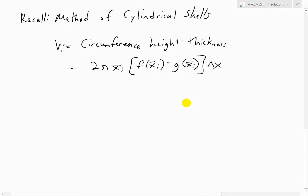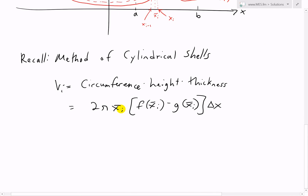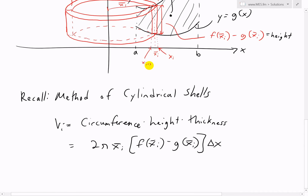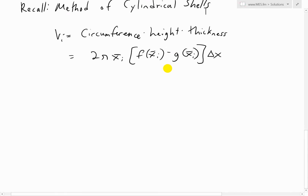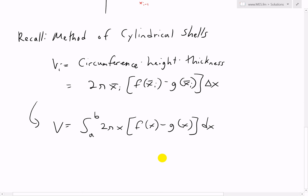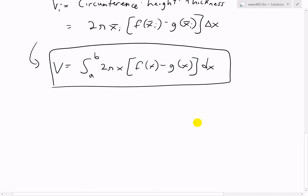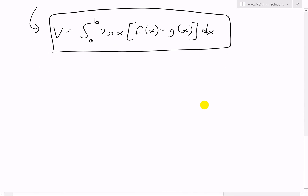Summing this up, where x-bar i coincides with x as we take the limit to infinity, we get the total volume as the integral from a to b of 2π x times [f(x) minus g(x)] dx. That is the volume of the shape generated when you rotate the region between these two curves about the y-axis.